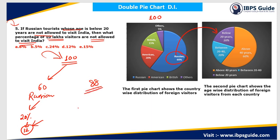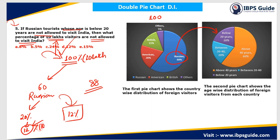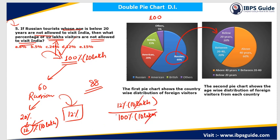So the remaining 88% are allowed to visit India. They are asking what percent of people are not allowed to visit — that is 12%. I can directly say 12% without using the 10 lakh figure. Because if I put 12% of 10 lakh in the numerator and 100% of 10 lakh in the denominator, the 10 lakh cancels out and I am left with 12 by 100, which is 12%. So the answer is 12% directly.